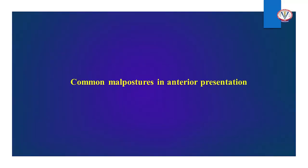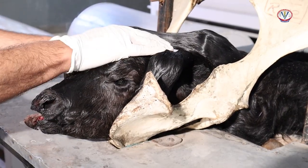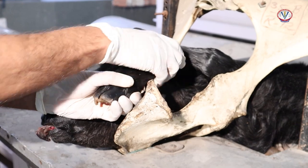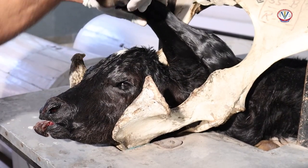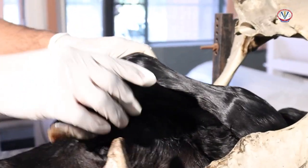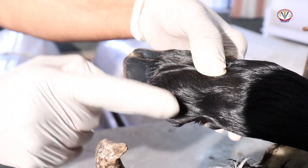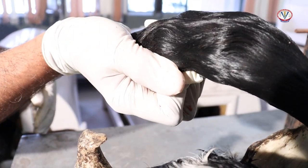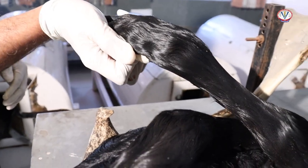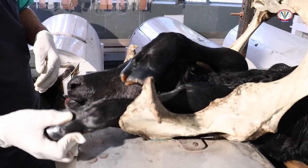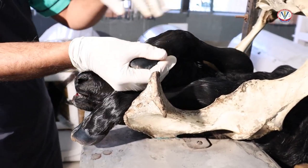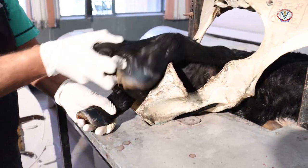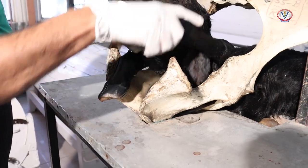Common malpostures in anterior presentation: Crossing of both forelimbs above the head — the head is in the birth canal while the two limbs are felt short and raised up. Careful examination reveals both limbs are felt above the head. For correction, hold the displaced fetlock and hoof, raise it, force it outward and downward to its appropriate side, and extend it in the genital passage. Similarly for the other limb: raise it up, rotate outward, and extend it in the birth canal. Confirm the fetal posture before delivery by applying traction.